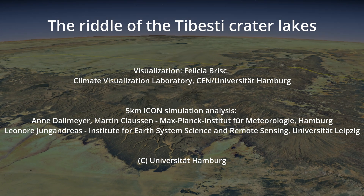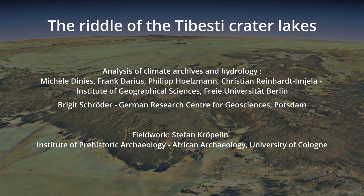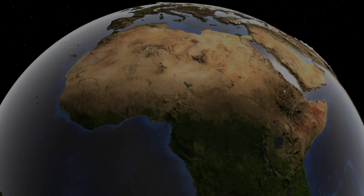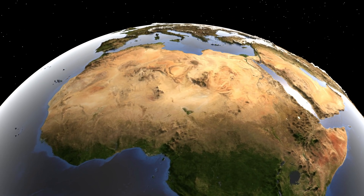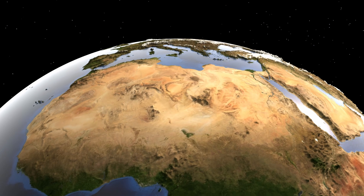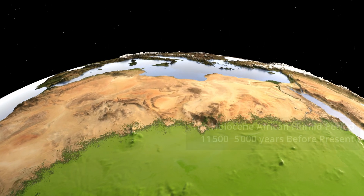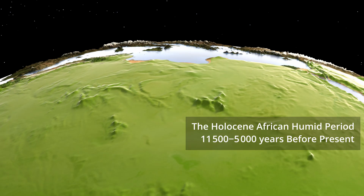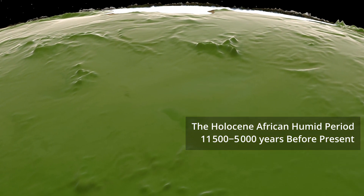The Sahara alternates between dry and humid phases due to changes in the Earth's orbit, driven by the precession of the equinoxes, which affects seasonal solar radiation. These wet periods occur roughly every 20,000 years. The most recent, the Holocene African Humid Period, transformed the Sahara into a green landscape with expanded vegetation and large, permanent lakes, supporting human migration and cultural development.